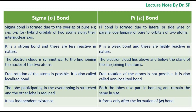Today I will discuss sigma bond and pi bond in this tutorial. Sigma bond is formed due to the overlap of pure s-s, s-p, p-p, or hybrid orbitals of two atoms along their internuclear axis. Pi bond is formed due to lateral or side-wise or parallel overlapping of pure p orbitals of two atoms.